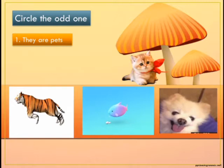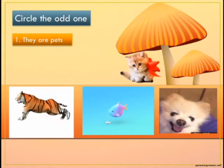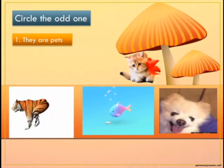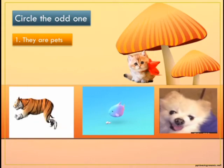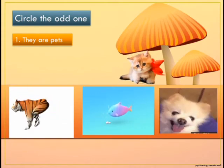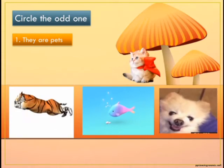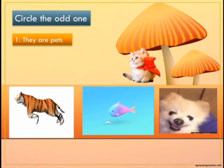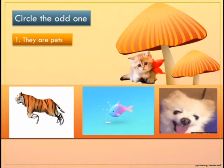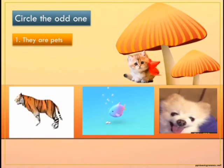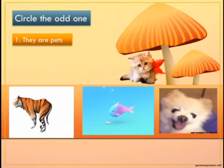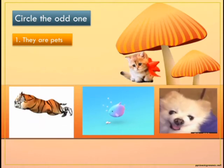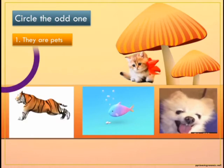First, we have a set labeled 'they are pets.' Here you can see different animals like a tiger, a fish, a dog, and a cat. You know that pets are animals we keep at home. We can keep a cat, a dog, or a fish aquarium at home. But what about a tiger? Can we keep a tiger at home? No. So tiger is different from the other animals — it is the odd one and we have to circle it.